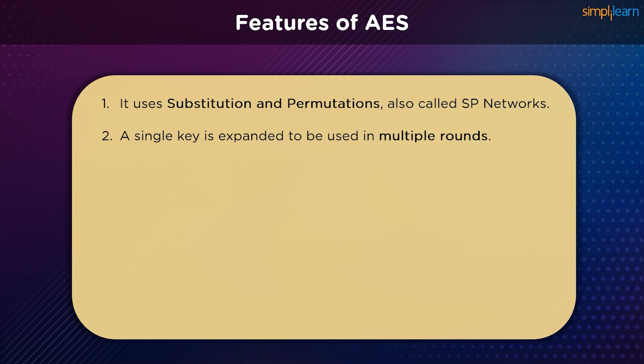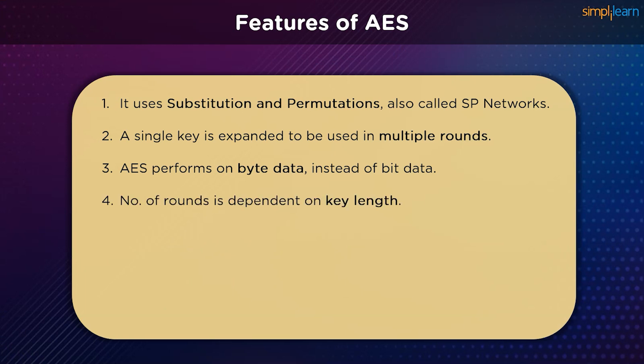At the beginning of the encryption process we start out with a single key, which can be either a 128-bit key, a 192-bit key, or a 256-bit key. This one key is expanded to be used in multiple rounds throughout the encryption and decryption cycle. Interestingly, AES performs all its calculations on byte data instead of bit data as seen in DES. Therefore AES treats 128 bits of a plaintext block as 16 bytes.